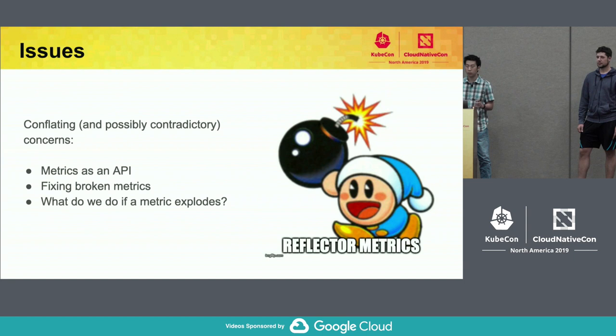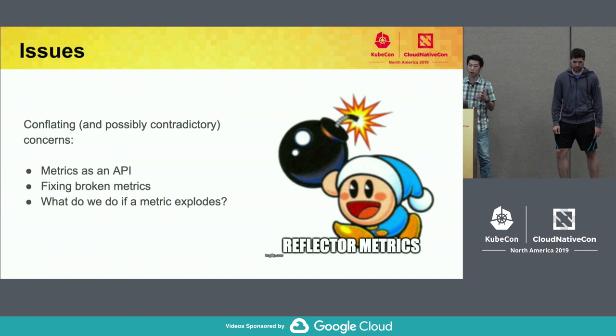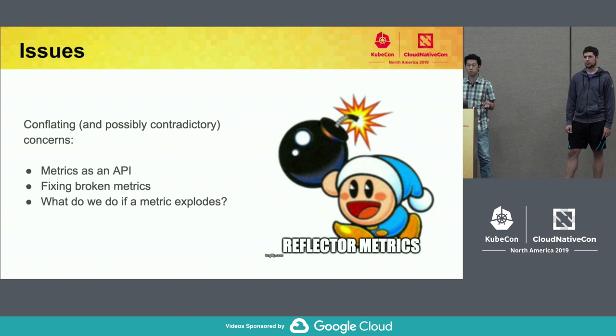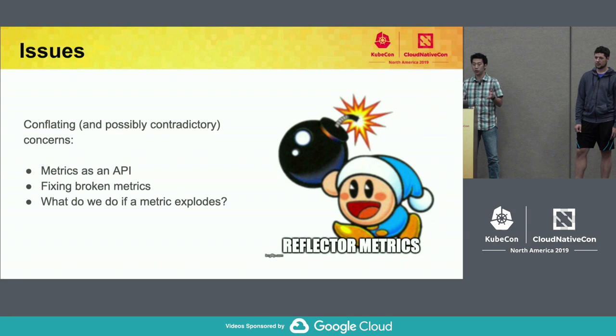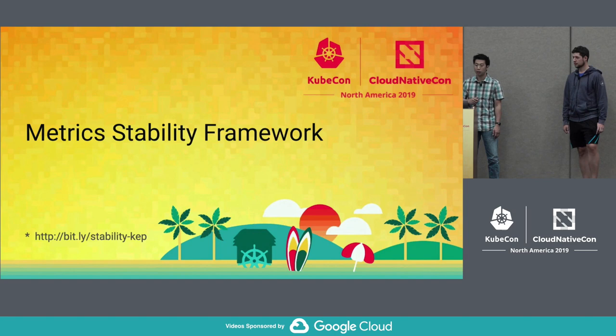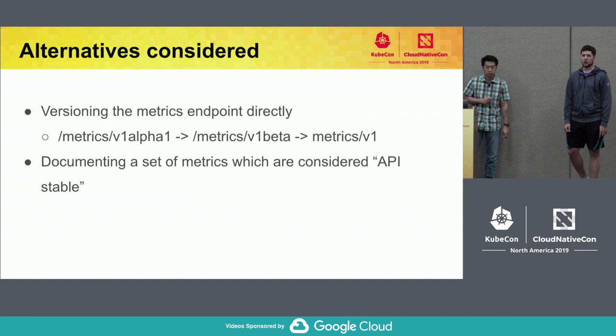So we came to this crossroads. We want to do this thing where we want metrics to be stable, like an API. At the same time, we have all these broken, screwed up metrics. And the question is: what do we do if there's a metric which people are using to generate charts or alerts off of? What if that becomes a memory leak? Do you keep it as a stable API or do you fix it? Out of that came our new trigger for the Metric Stability Framework. It wasn't like we haven't tried versioning things before in Kubernetes — it's just that metrics have some unique constraints.